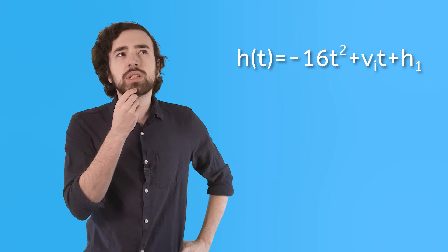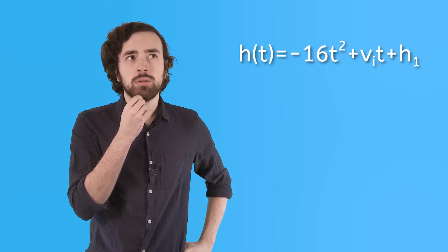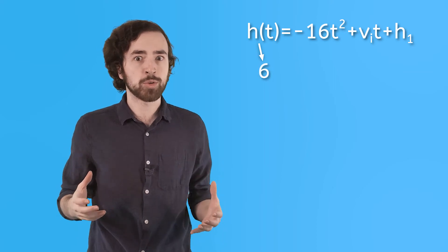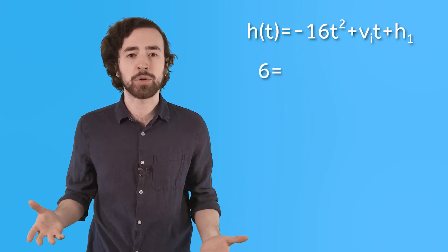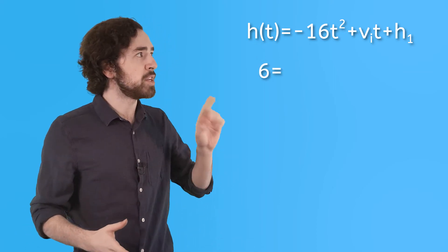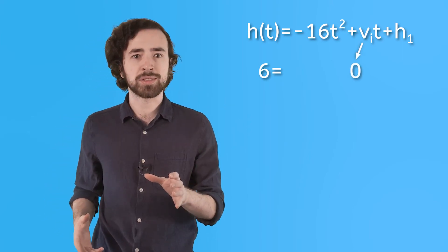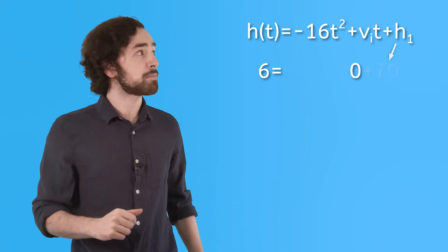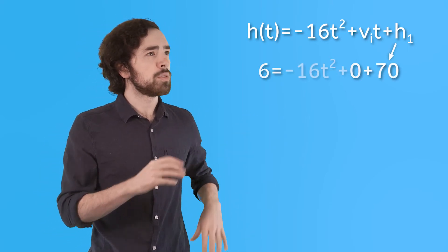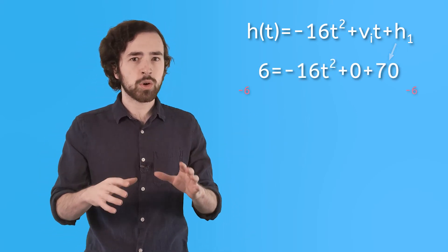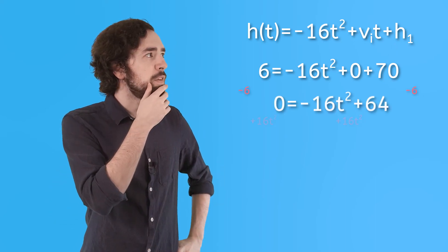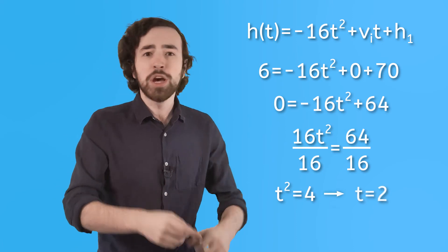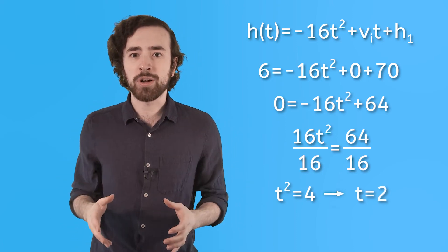So Jordan's six feet tall. So we can set that as our end result for the equation because I want the water balloon to land on her head, not on the ground. We can also set the initial velocity to zero because I'm just dropping it, not throwing it or anything. And finally, I know the height of my building. That's 70 feet tall. So now we can solve the equation and figure out that it will take exactly two seconds for the water balloon to hit her head.